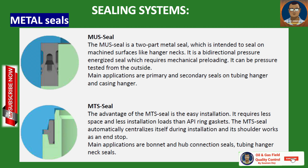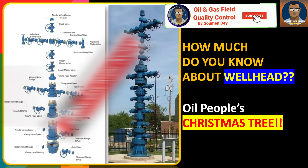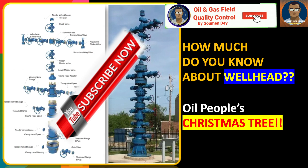The last seal is the MTS seal. The advantage of the MTS seal is easy installation — it requires less space and less installation loads on API ring gaskets. The MTS seal automatically centralizes itself during installation and each shoulder works as an end stop. Main applications are bonnet and hub connection seals, and tubing hanger neck seals.